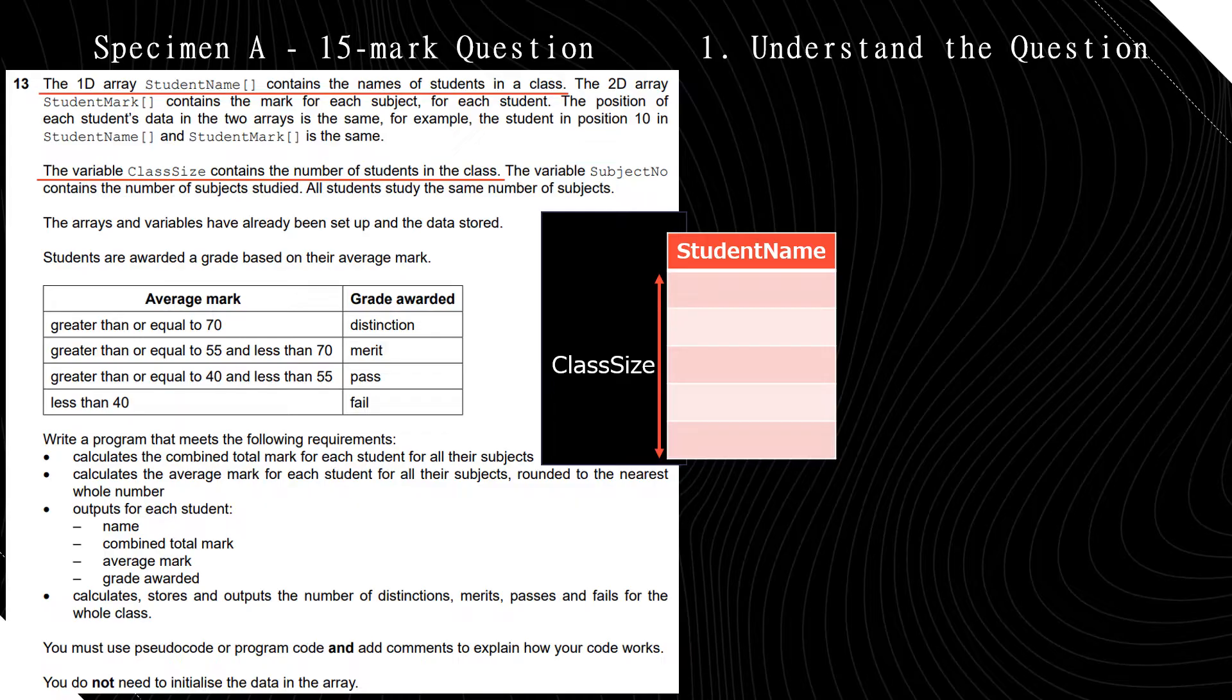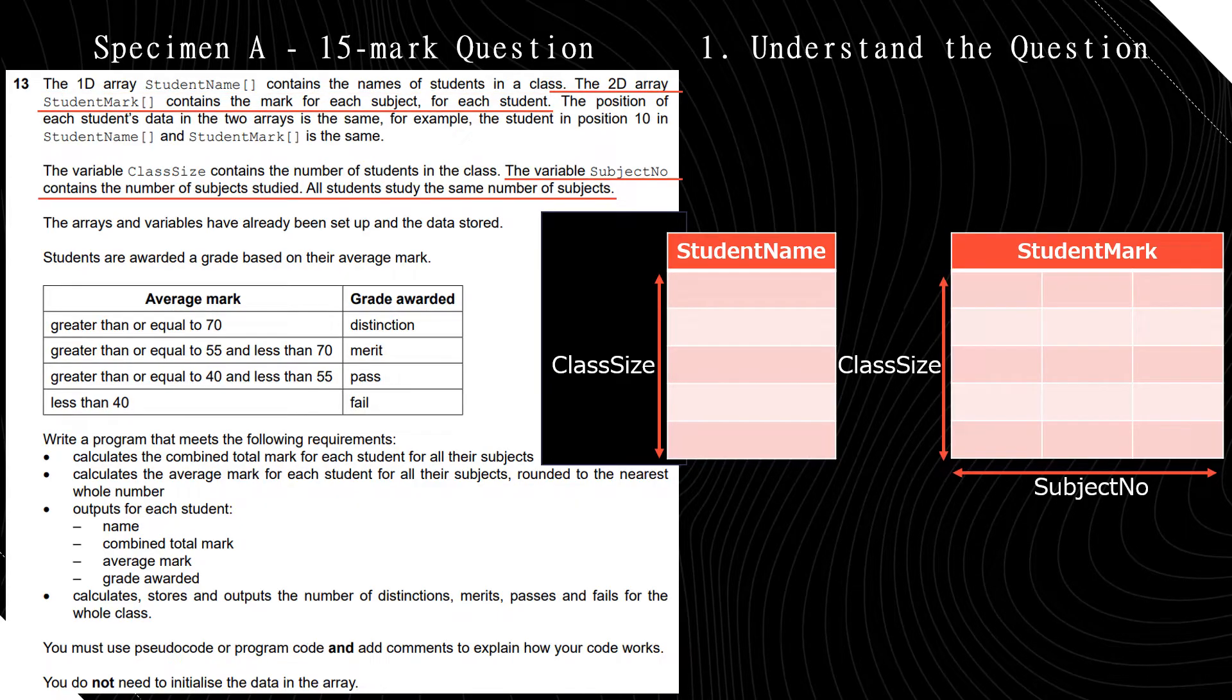So the first array, as we can see, is a 1D array called student name, and the length of that array, or how many elements are in that array, is equal to class size. The second data structure that we have is a 2D array, and this 2D array has the number of rows of class size and the number of columns of subject number.